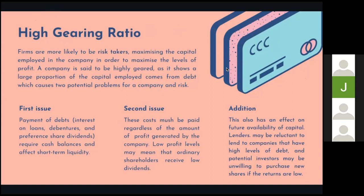For the second issue, these costs must be paid regardless of the amount of profit generated by the company. Low profit levels may mean that ordinary shareholders receive low dividends. In addition, this also has an effect on future availability of capital. Lenders may be reluctant to lend to companies that have high levels of debt, and potential investors may be unwilling to purchase new shares if the returns are low.